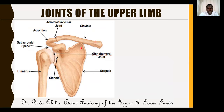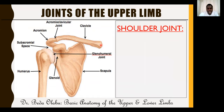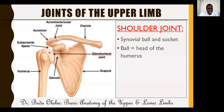Starting with the shoulder joints. The shoulder joint is a synovial joint of the ball-and-socket variety. The ball is formed by the head of the humerus, and the socket is formed by the glenoid cavity of the scapula. The glenoid has a margin of fibrocartilage called the glenoid labrum, which deepens the socket.